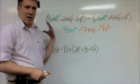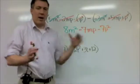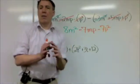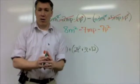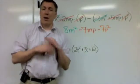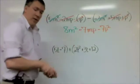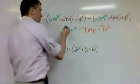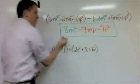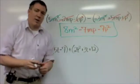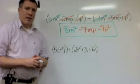I can't combine them. There's no more simplifying I can do. If I do any more simplifying, I've done something wrong. This is my final answer. 8m squared minus 7mp minus 7p squared.